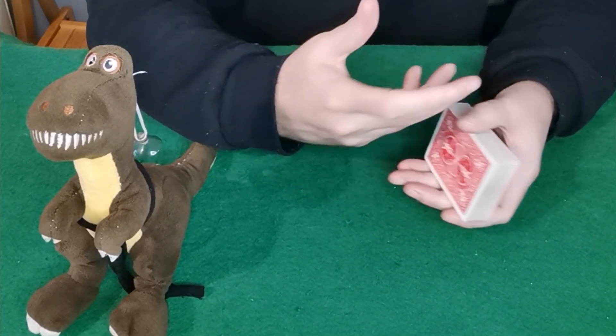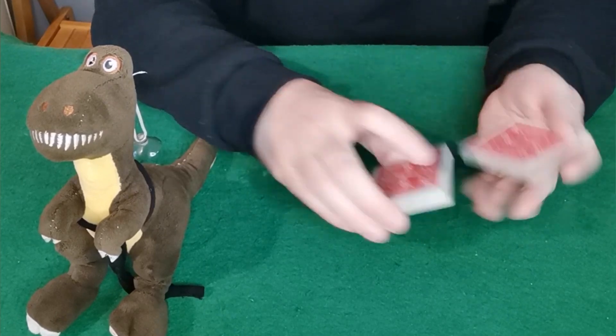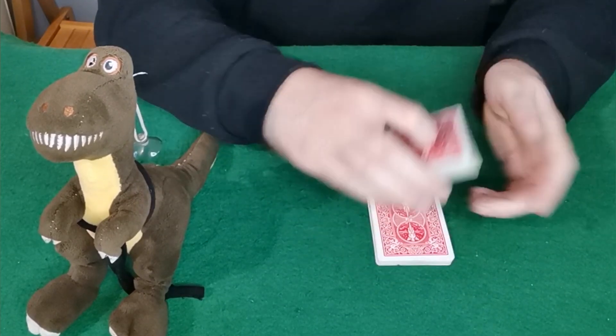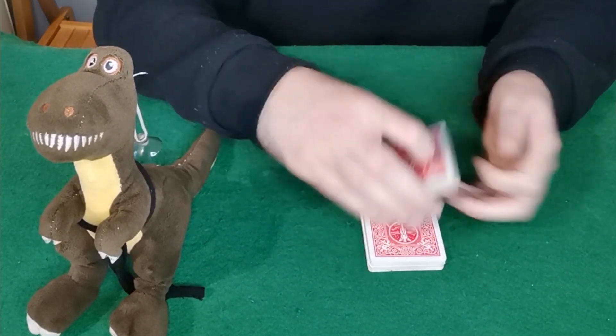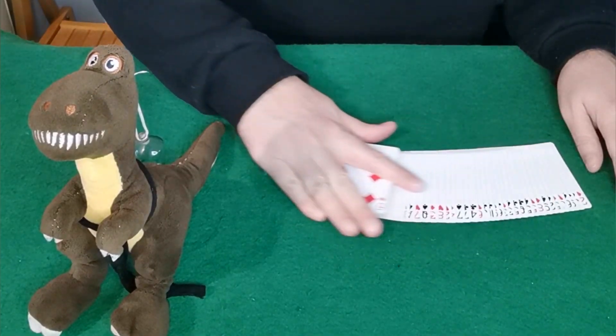So you'll say now your card is lost somewhere in the middle of the deck here and all I have to do, and you can now have them cut the deck a couple of times. They can cut it as many times as they want and all I have to do is just spread through the cards and remember my four of diamonds is on top of their card.